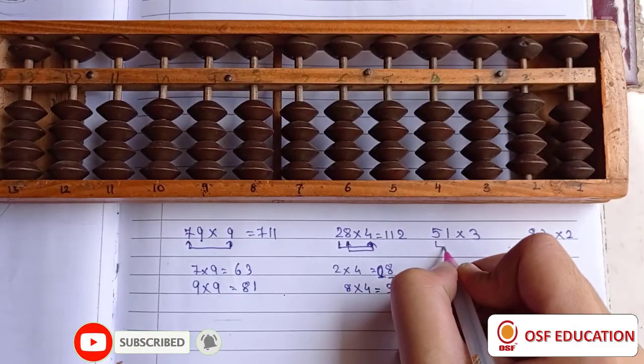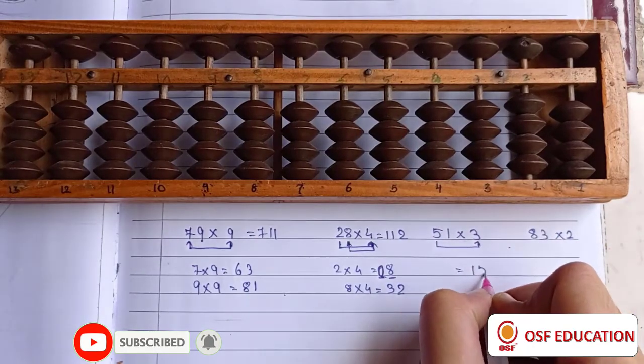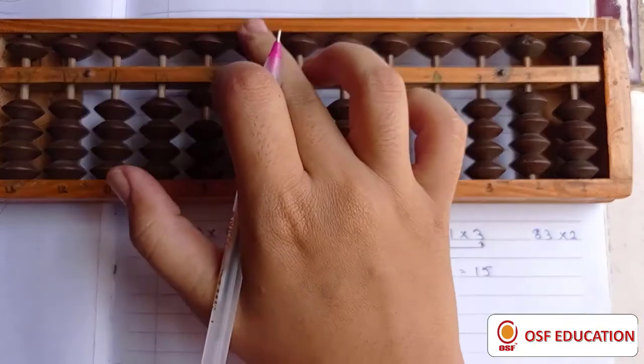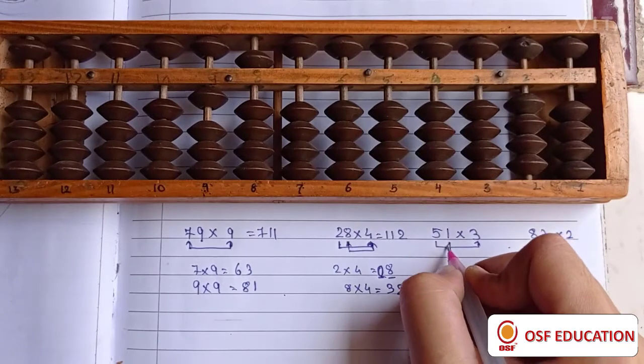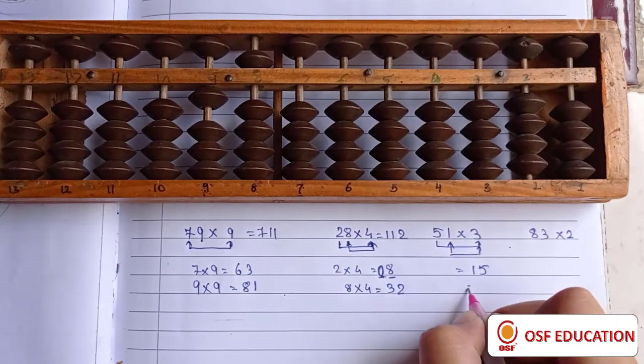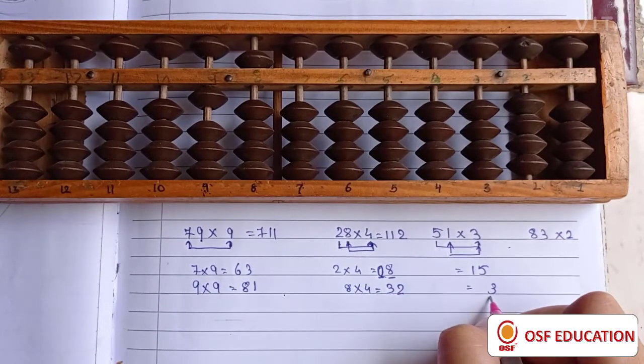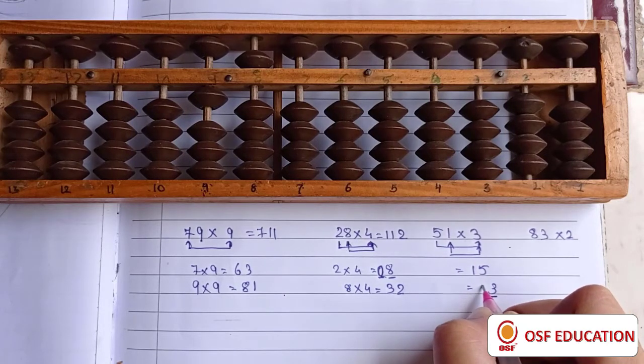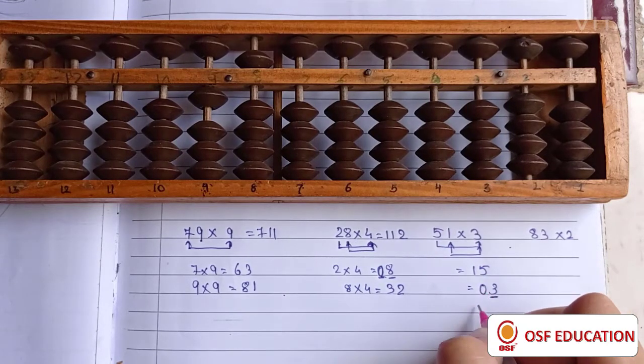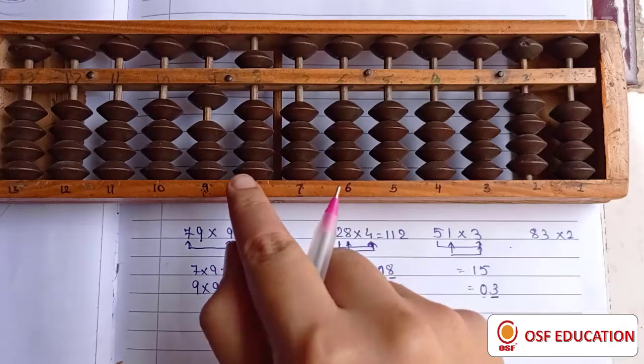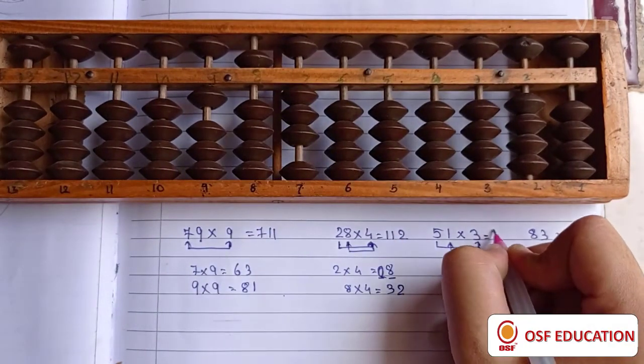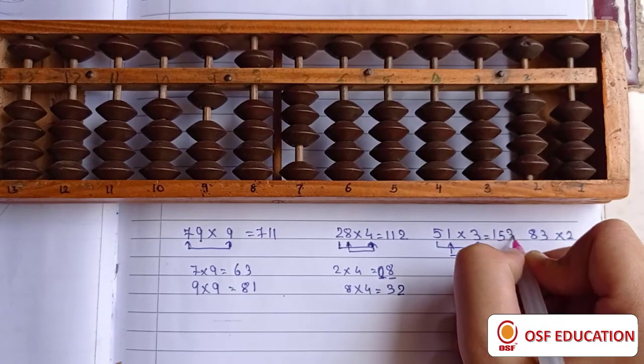Same way, 51 times 3 will give us 15. So 1 and 5. And 1 times 3 gives us 3, but it is only 1 digit number. So adding 0 before 3 will give us a 2 digit number. So 0 and here 3. So our answer is 153.